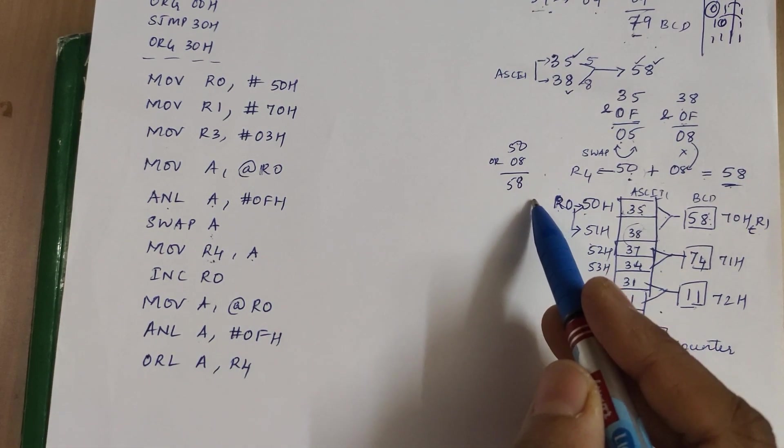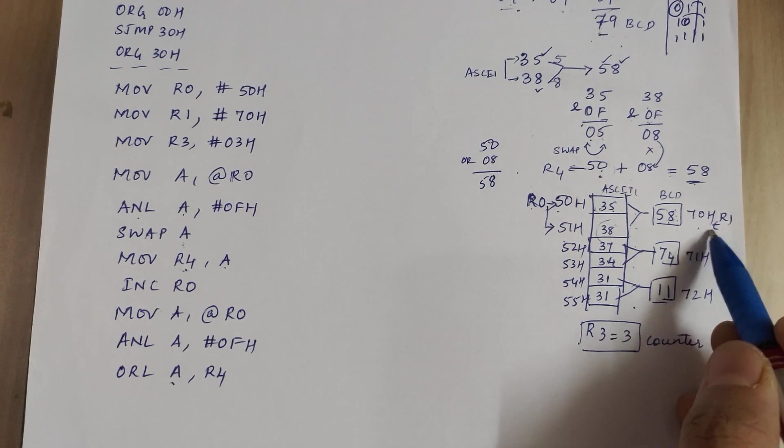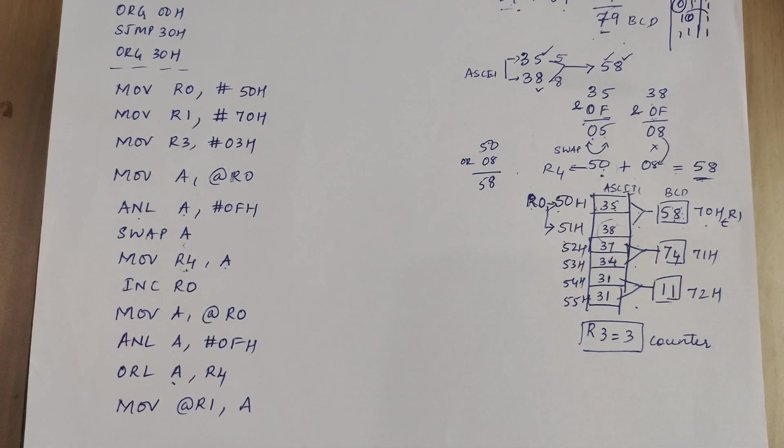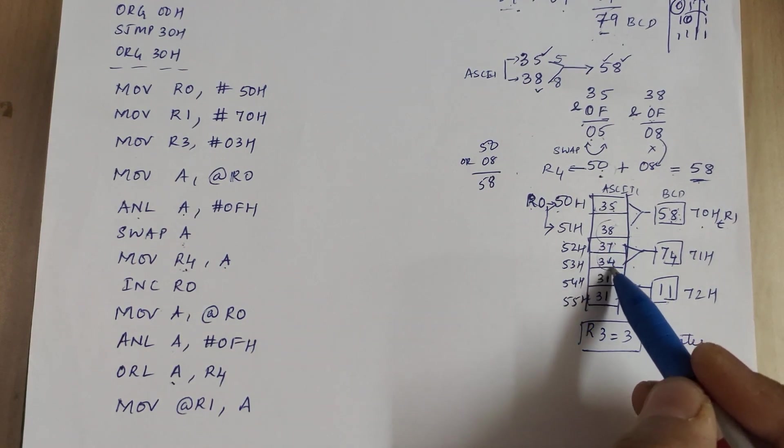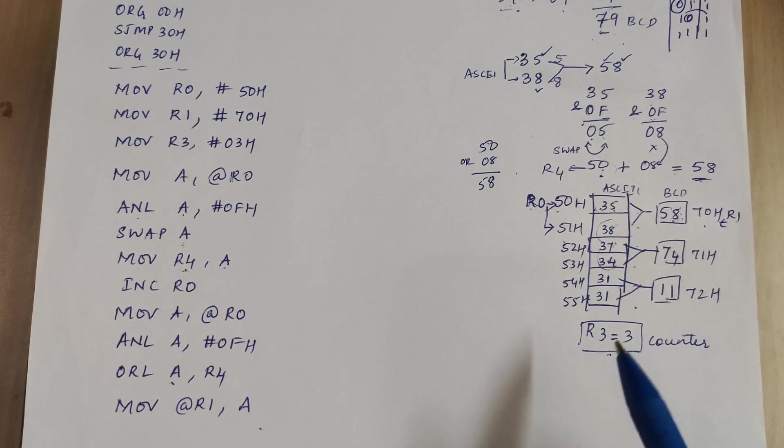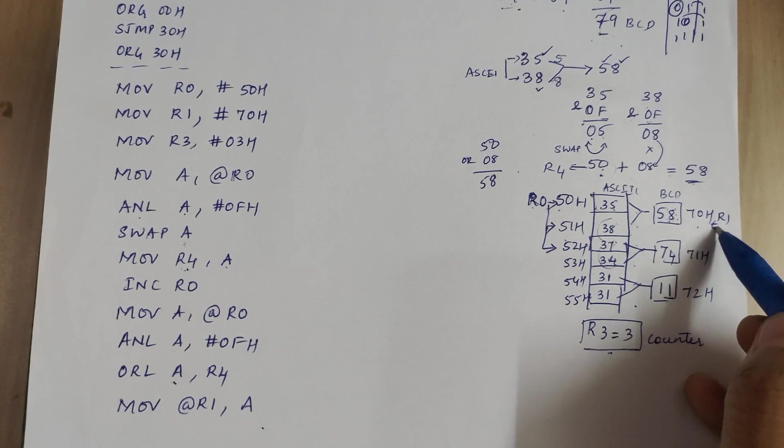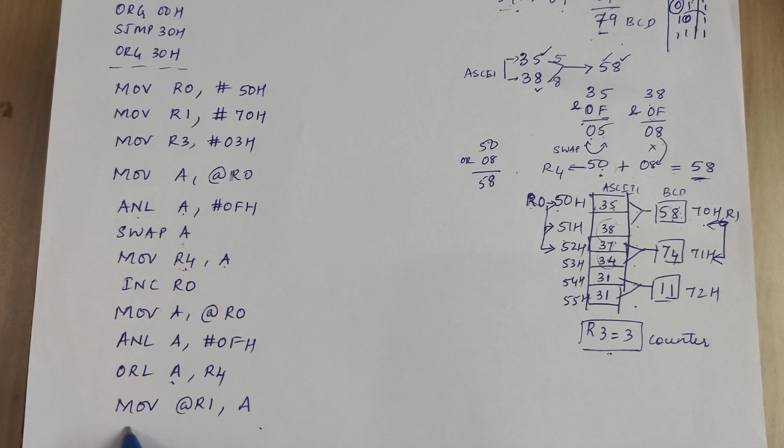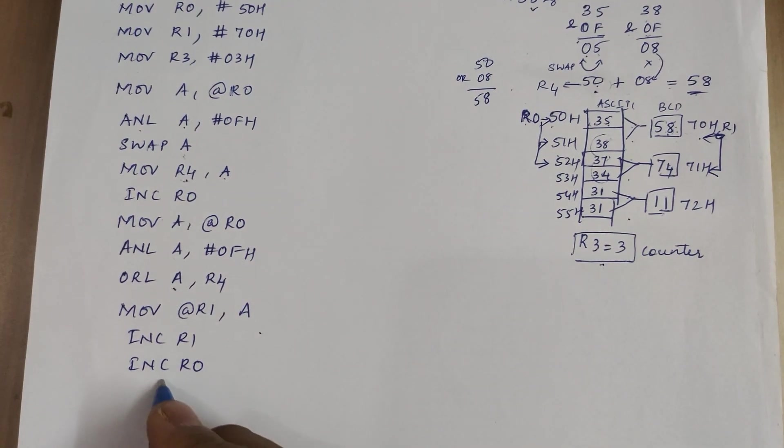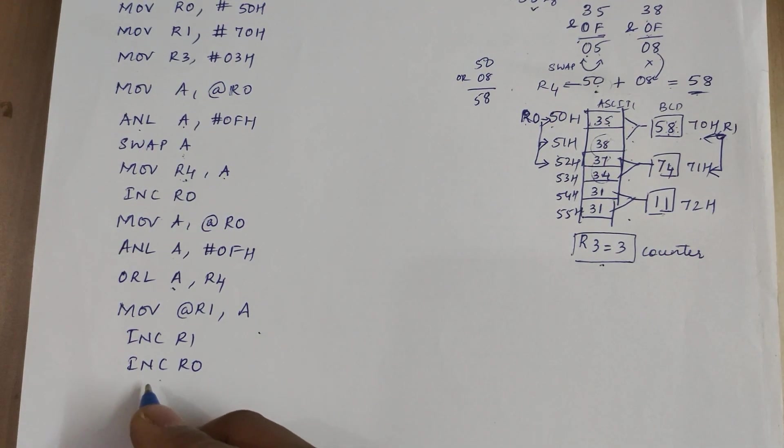So now 58 is ready in accumulator. Where are we supposed to store this 58? In 70H. Who is pointing to that location? R1. So we can write move at the rate of R1 comma A. Now I have to start the same procedure. I have to take the next two digits. So we have initialized the counter, let's make use of the counter. Let's increment the pointers, the source and destination pointers to point to the next locations. So increment R1 and increment R0. Once they are incremented we have to check how many more ASCII numbers are there.